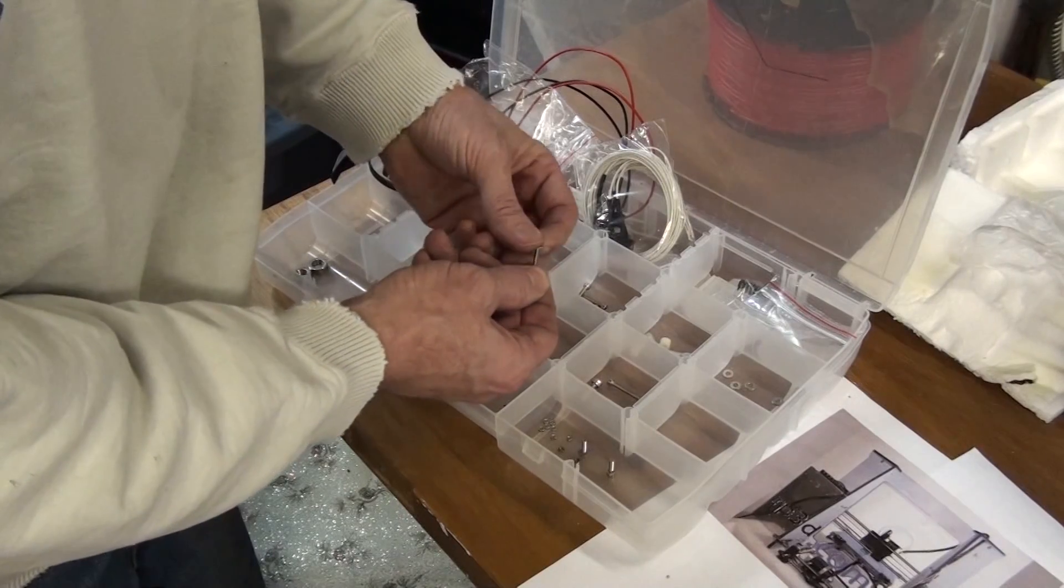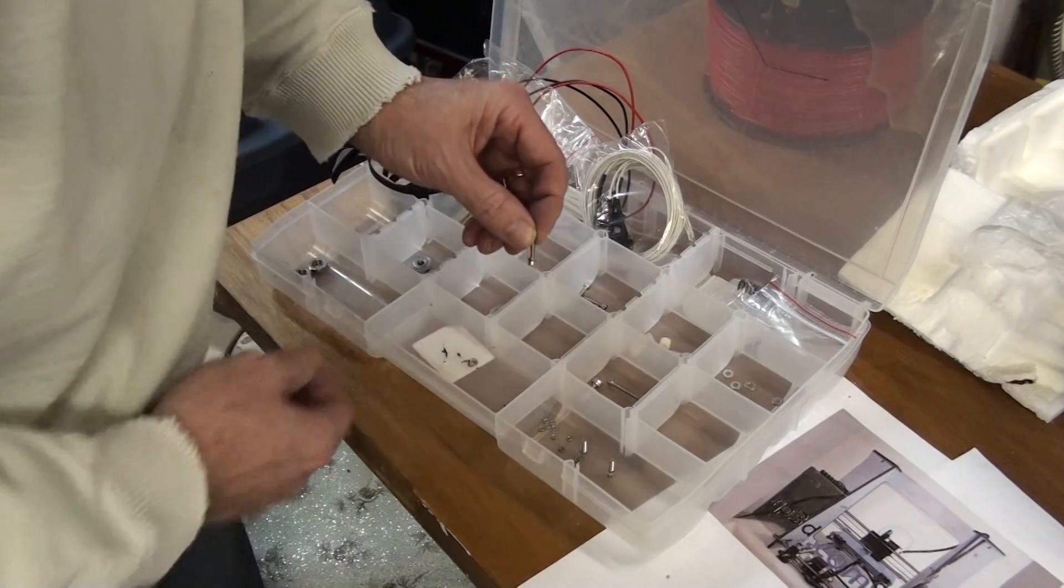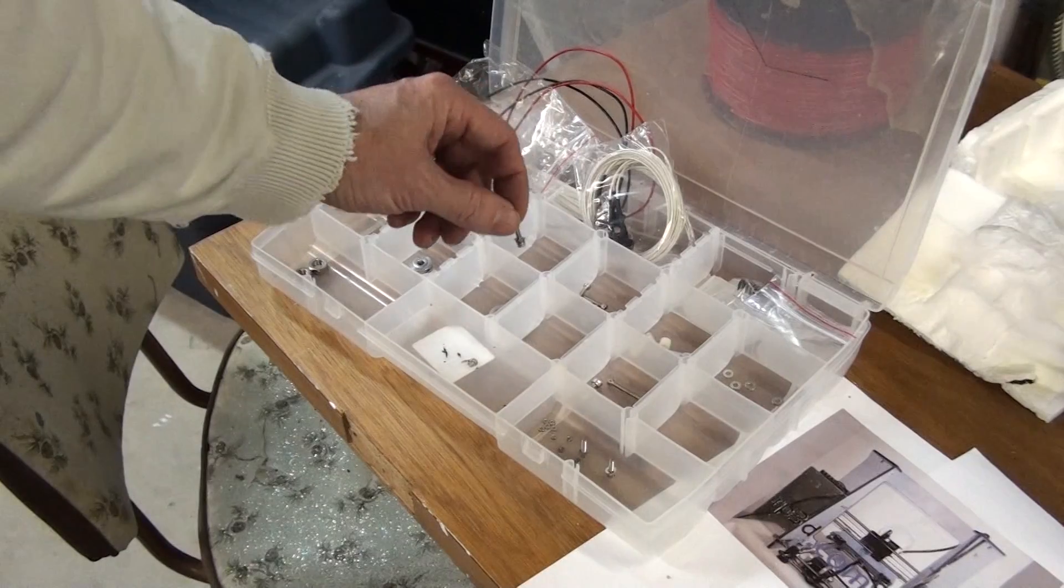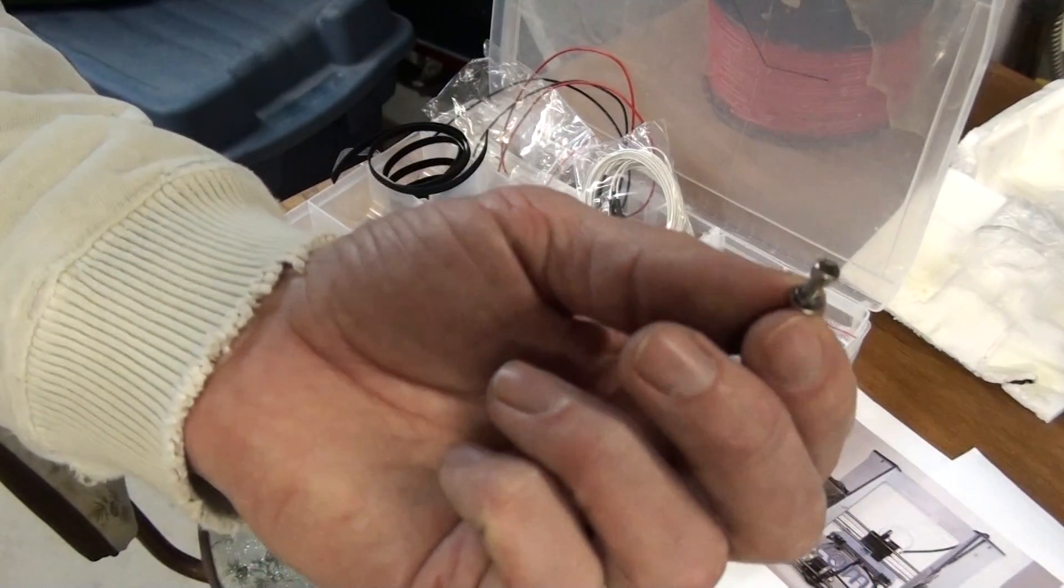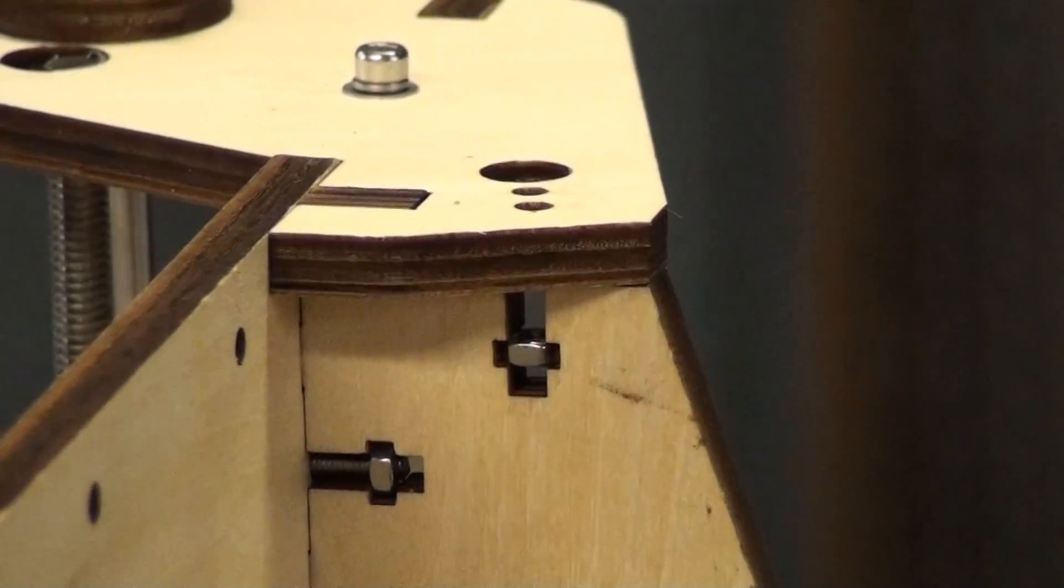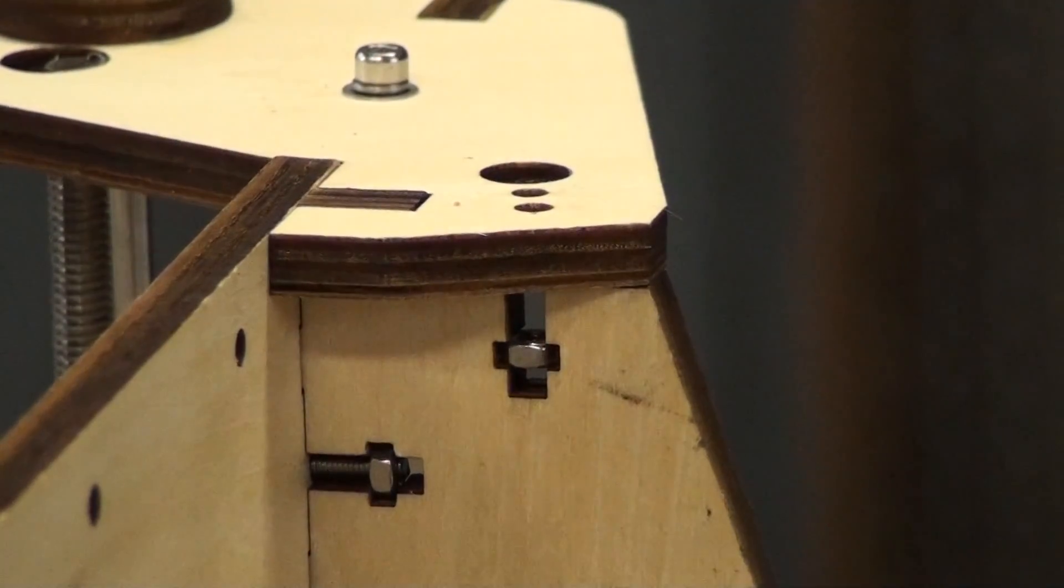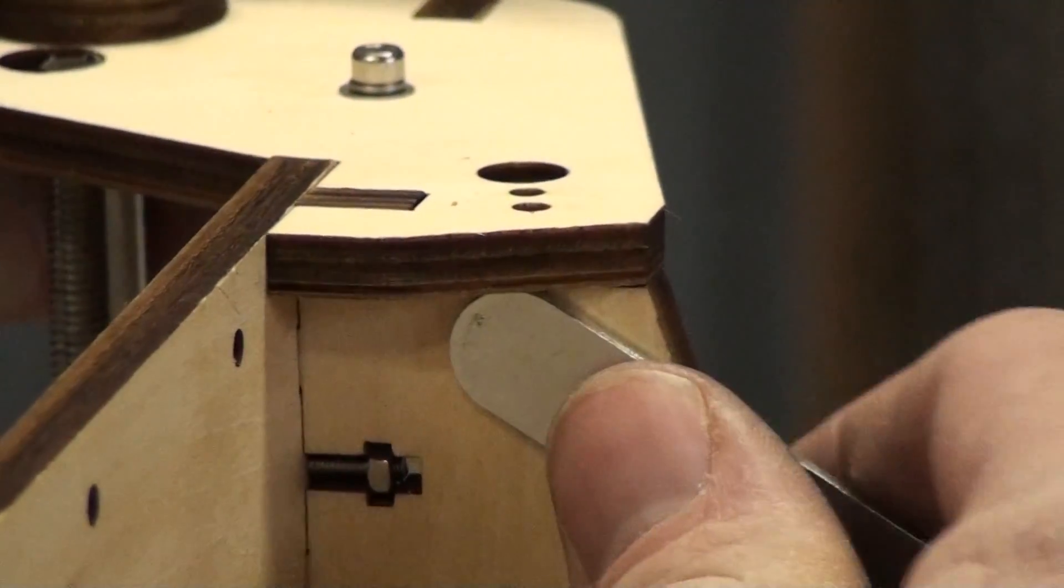The most common bolt you'll be using is the three-quarter inch. First place a lock washer on, then a regular washer to keep it flat. This laser cut wood is so precise the nuts can be pressed into the key to make sure they hold.